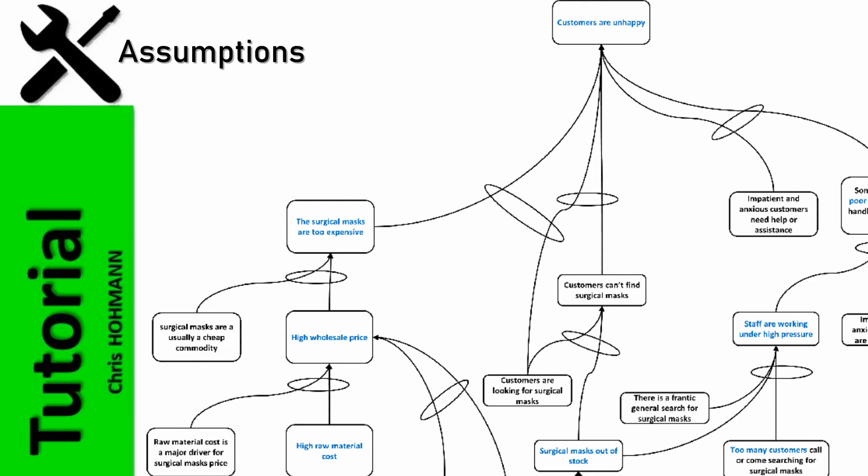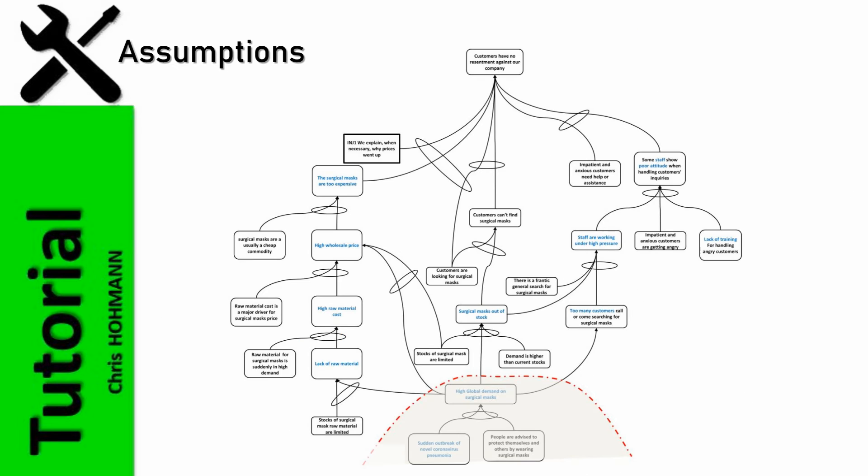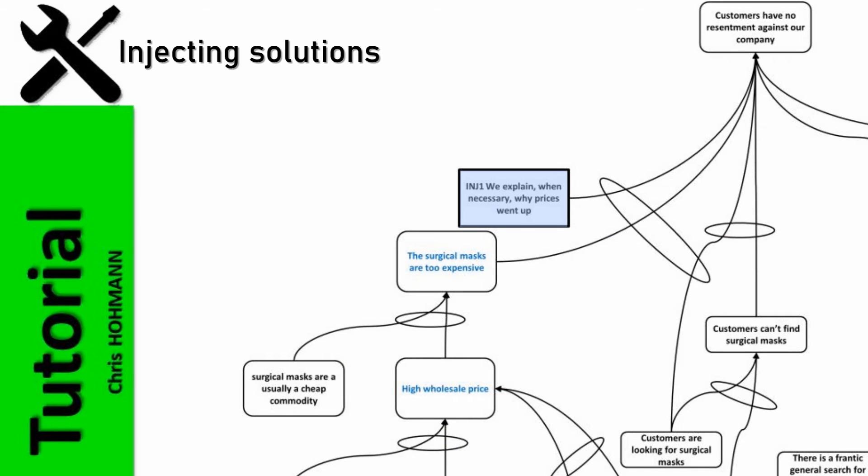I would also assume that customers may not be happy if the prices of surgical masks soar, but as long as they can still afford them and get them when needed, the resentment will be limited if the whole market experiences high prices. I would therefore not try to tackle the left part of the current reality tree because this is how free economies work. Except for the addition of injection number 1, we explain when necessary why prices went up.